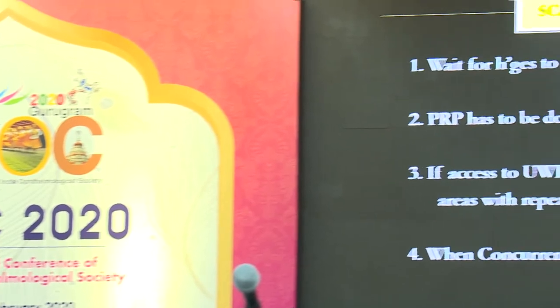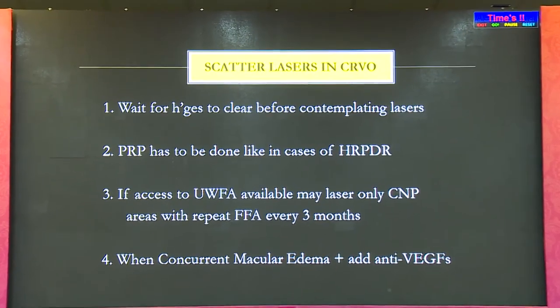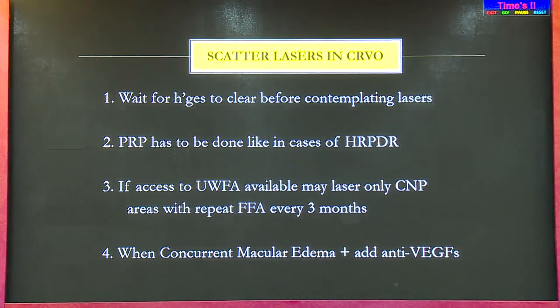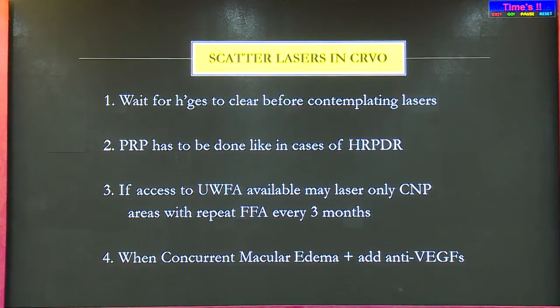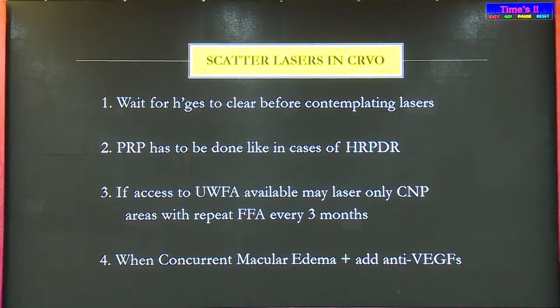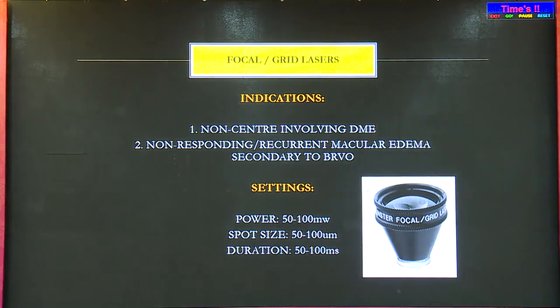In a case of BRVO, you should see where there is one competent vessel and do laser in all the ischemic areas. As you come closer to the fovea, reduce the laser spot size, and cover all ischemic areas nicely. For scatter lasers in CRVO, wait for hemorrhages to clear, then do PRP like you would for high-risk PDR. If ultra-wide-field imaging is available, mark out non-perfused areas, do lasers, and repeat FFA at three to six months. When concurrent edema is present, add anti-VEGFs.